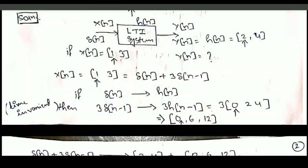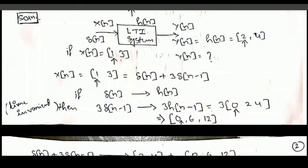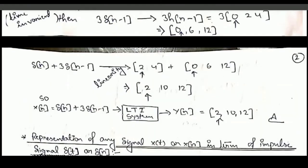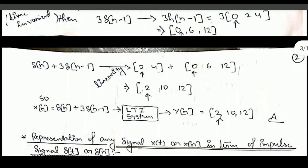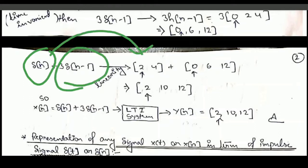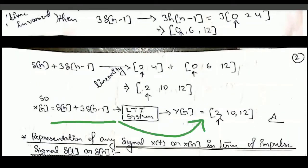The shift of minus 1 means the arrow moves towards the left, so a 0 is prepended to the response, giving {0, 2, 4}. When 3 is multiplied throughout, 3δ[n−1] generates the response {0, 6, 12}. So the response to δ[n] is {2, 4} and the response to 3δ[n−1] is {0, 6, 12}.